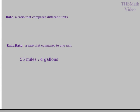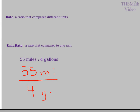To make a unit rate, I have to make sure that the rate is compared to one unit. So if I have 55 miles in 4 gallons, I want to know how far I go on 1 gallon.